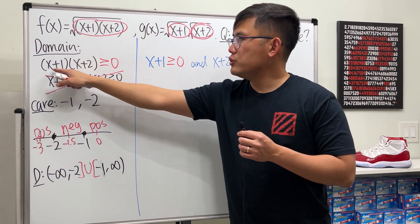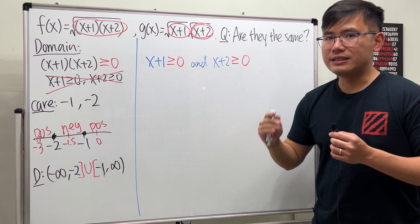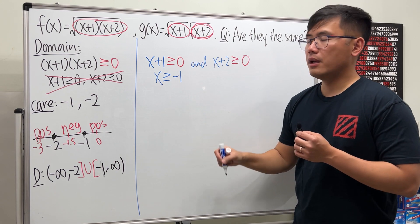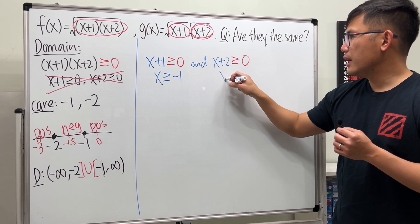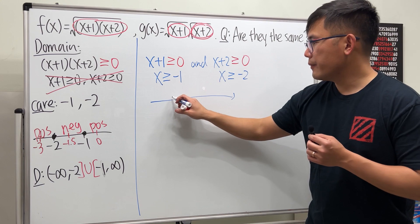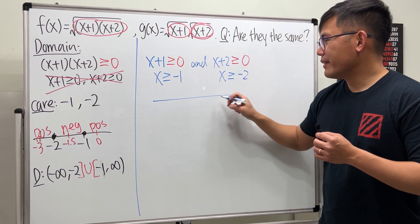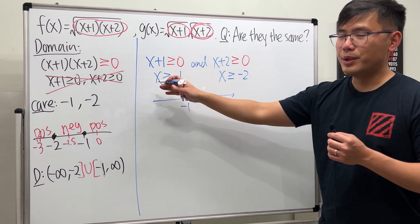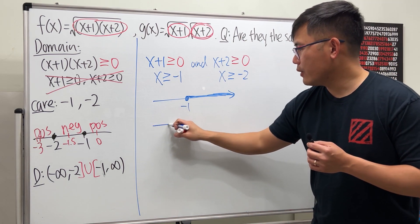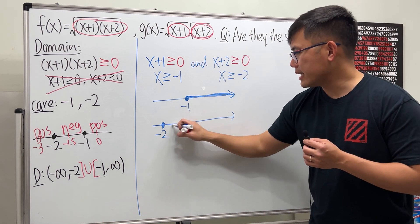We are now dealing with two inequalities and we need their intersection. From x+1 ≥ 0, we get x ≥ -1. From x+2 ≥ 0, we get x ≥ -2. On a number line, x ≥ -1 goes to the right from -1, and x ≥ -2 goes to the right from -2, both including their endpoints.